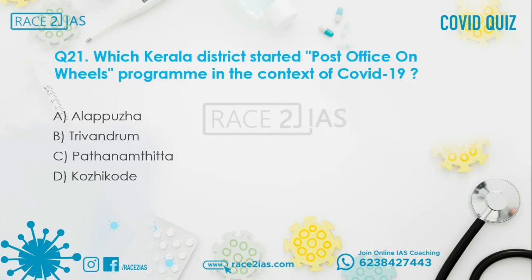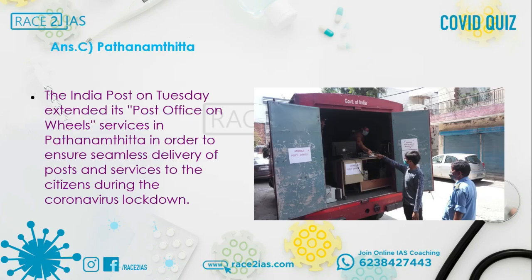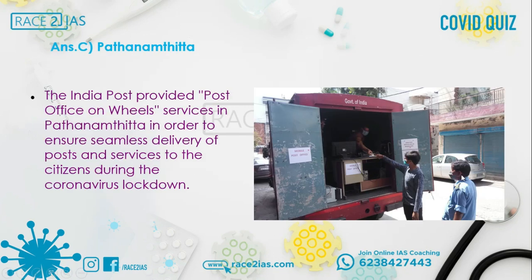Question number 21: Which Kerala district started the Post Office on Wheels program in the context of COVID-19? Option A: Namaste. Option B: Trivandrum. Option C: Pathanamthitta. Option D: Kozhikode. The right answer is Option C, Pathanamthitta. India Post provided Post Office on Wheels services in Pathanamthitta to ensure seamless delivery of posts and services to citizens during the coronavirus lockdown.